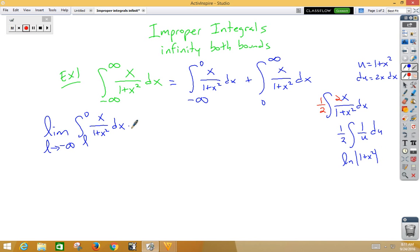So now let's come back over here, and we've got the limit as l approaches negative infinity. We have the natural log of absolute value 1 plus x squared from l to 0. If I plug in for that, I get natural log absolute value 1 plus 0 squared, which would just be the natural log of 1, which is 0.